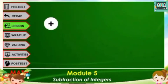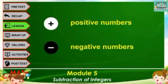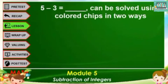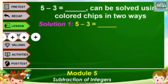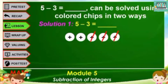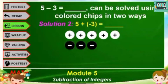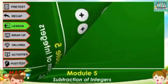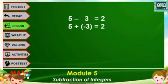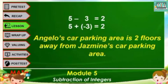The problem can be solved using colored chips. White chips represent positive numbers while black chips represent negative numbers. For 5 minus 3: the first solution is to represent 5 using 5 white chips, subtract 3 by removing 3 white chips, and 2 white chips remain. The second solution is expressed in addition: represent 5 using 5 white chips, add negative 3 using 3 black chips. The 3 white and 3 black chips cancel to 0, and 2 chips remain. Thus, 5 minus 3 equals 2, and 5 plus negative 3 equals 2. Therefore, Angelo's car is 2 floors away from Jasmine's car.